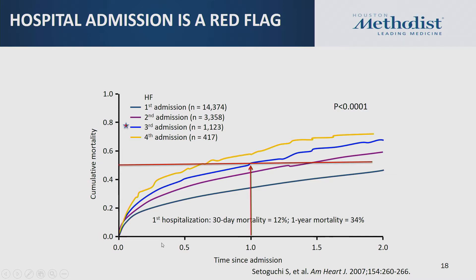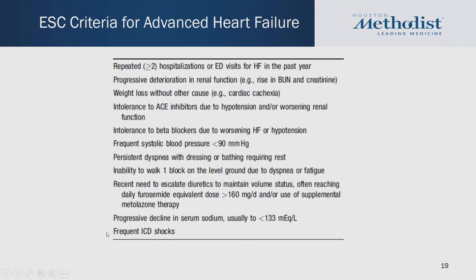Another factor we look at in determining advanced stage C is the number of hospital admissions. Data from the Canadian database shows that three or more admissions correlates with 50% one-year survival after acute decompensated heart failure. The ESC criteria for advanced heart failure include repeated hospitalization, progressive end-organ dysfunction, rising BUN and creatinine, intolerance to heart failure goal-directed medical therapy, low blood pressure, NYHA class 3B or class 4 symptoms, and frequent ICD shocks. These patients should be referred to an advanced heart failure transplant program.